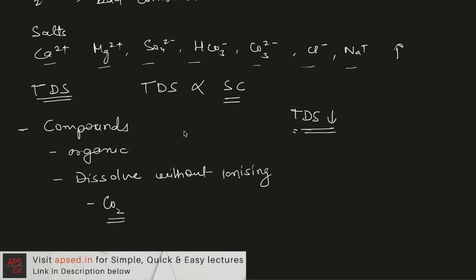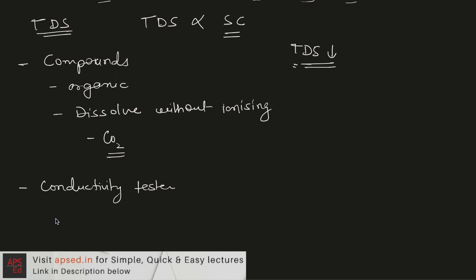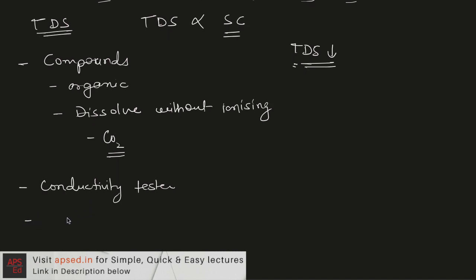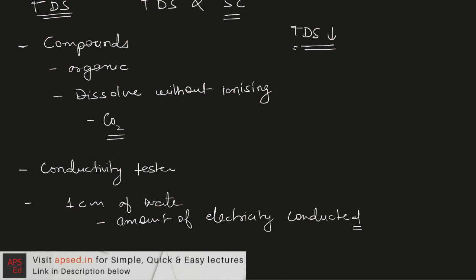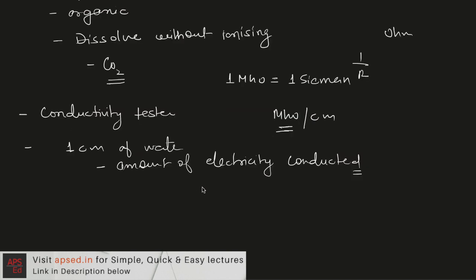Now for the measurement of this conductivity, an instrument called conductivity tester is used, which is a pen size instrument and it measures the amount of electricity conducted through one centimeter of water. So the units what we will obtain using conductivity tester, I mean the units of specific conductivity, it will come out as mho per centimeter. Mho is the unit of conductivity that is the inverse of resistance. We know resistance is given as ohm. So one upon ohm, we represent with mho. Instead of mho, sometimes siemens is also used. So one mho is equal to one siemens. And because the conductivity of water is very small, this value of specific conductivity is generally given in micro mho or micro siemens per centimeter.